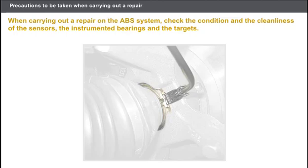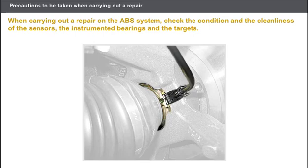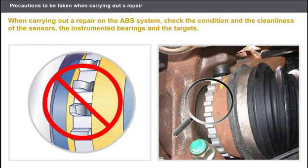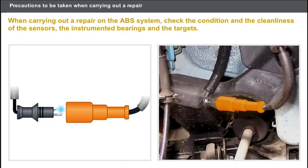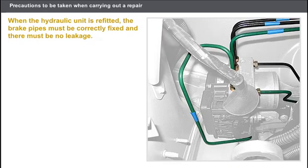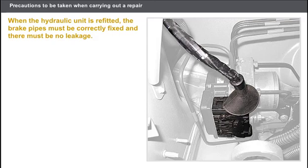Certain precautions must be taken when carrying out a repair on the ABS system. Check the condition and cleanliness of the sensors, the instrumented bearings, and the targets. Check to make sure that none of the targets are damaged. Check the condition of the wiring and the cleanliness of the electrical connectors. Take care to follow the correct routing of the wiring and connectors, as the reliability of the ABS system depends on this. When refitting the hydraulic unit, check that the brake pipes are correctly fixed and that there is no leakage of fluid. Also check that the wiring connection shows no traces of oxidation or overheating.